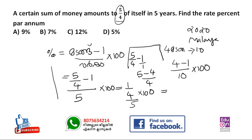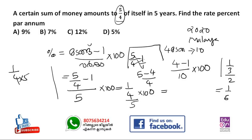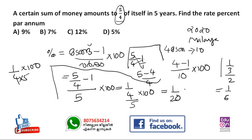Cross multiplying 5 by 4: 5/4 minus 1, cross multiply gives the solution. The final answer after simplification is obtained from 6 by 5.